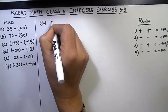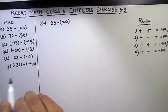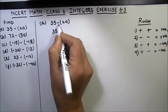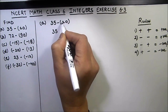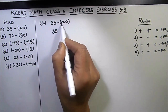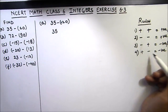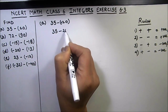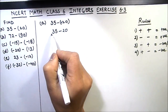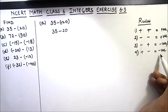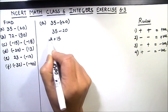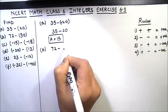The first part of Question 1 is 35 minus (-20). We write 35 as is. The minus sign and the 20 in parentheses means the sign of 20 is plus. So we have positive and negative — plus and minus makes minus. This gives us 35 minus 20. Again, positive and negative gives negative, so 35 minus 20 is 15. This is our final answer.